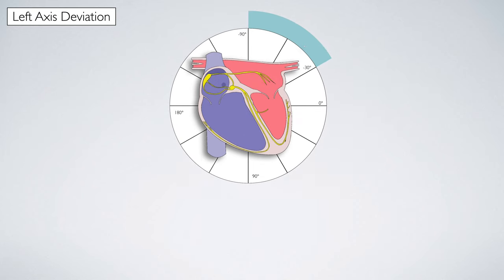As the electrical activity moves towards the left side of the heart, lead one becomes positive, whilst lead AVF turns negative. These outputs tell us that the cardiac axis falls somewhere between zero and minus 90 degrees in the highlighted area.